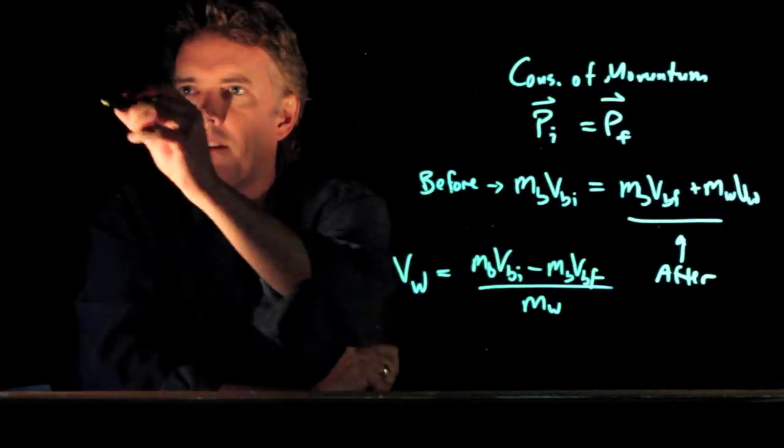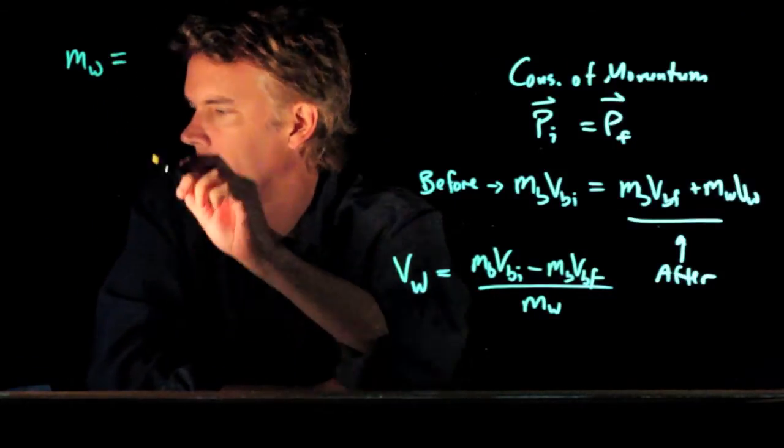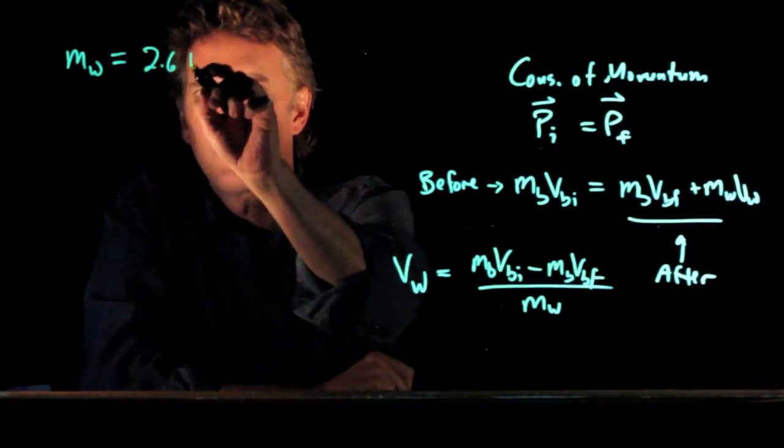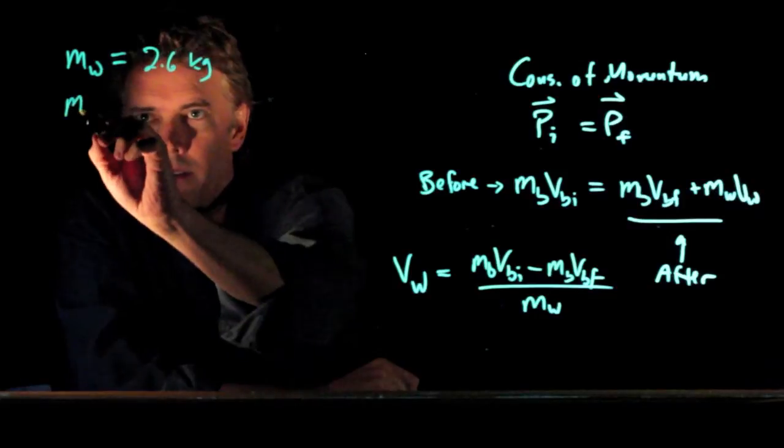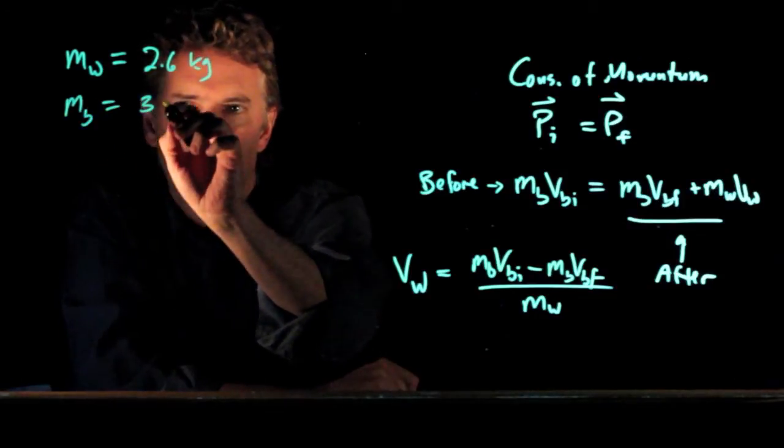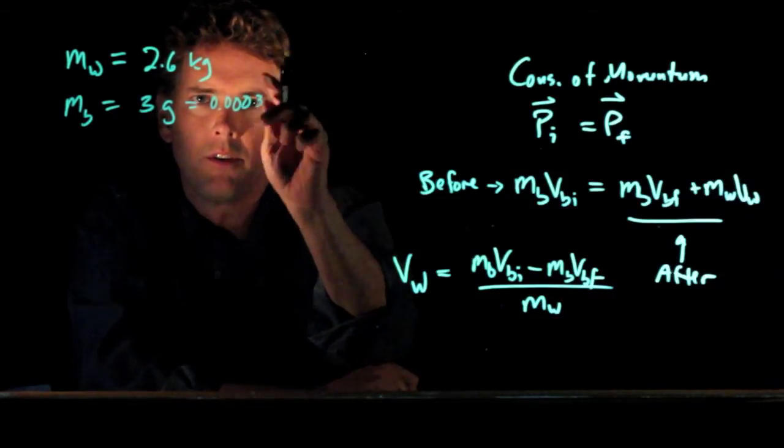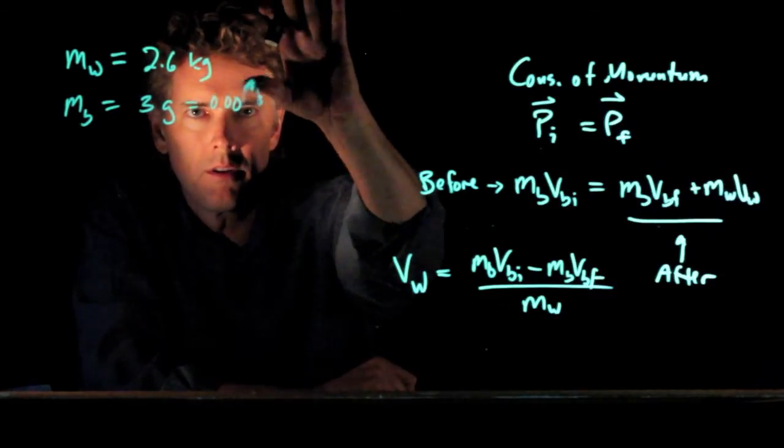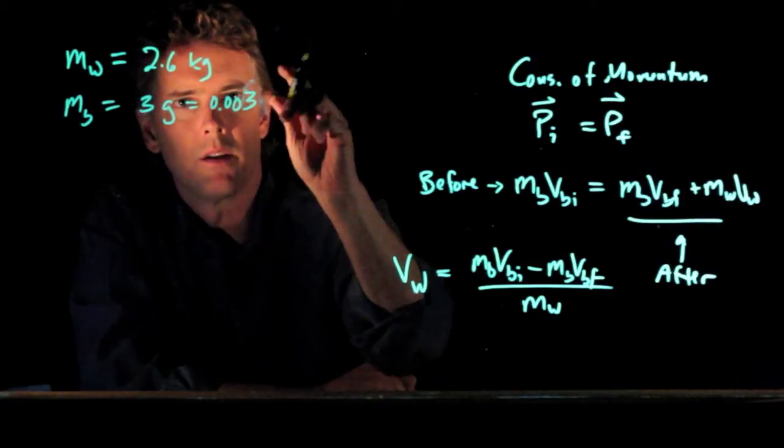Okay so let's say that the block, the mass of the wooden block is 2.6 kilograms. The mass of the bullet is 3 grams which is 0.003 kilograms.